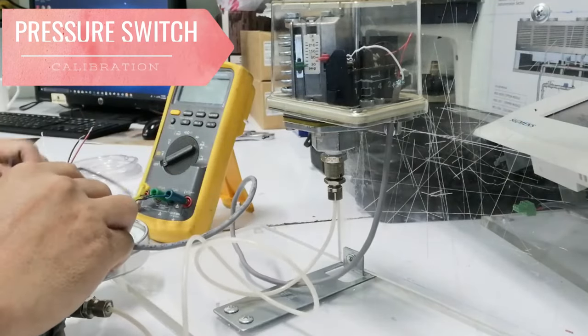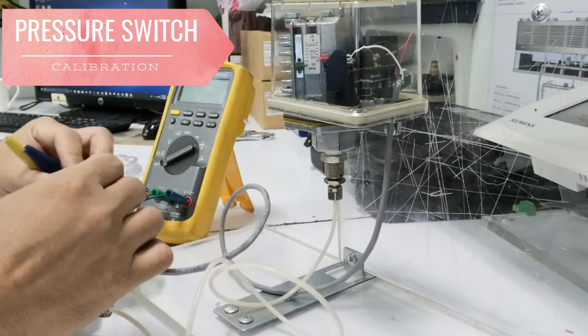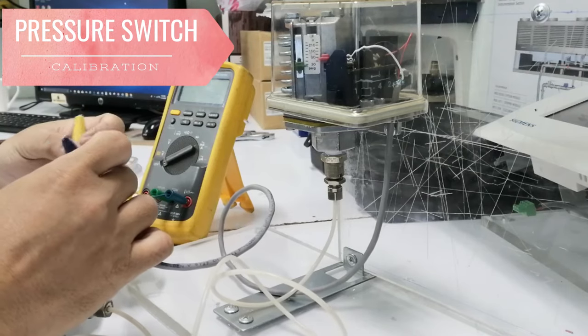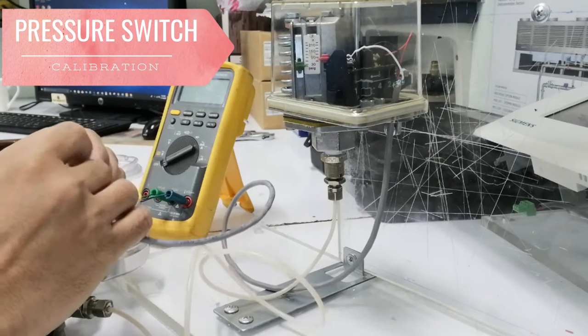Low pressure on the diaphragm closes contact 1 and 2 terminal. This can be used as a run signal for a pump or compressor motor. If pressure exceeds the upper switching point, contact 1 and 2 terminal opens.